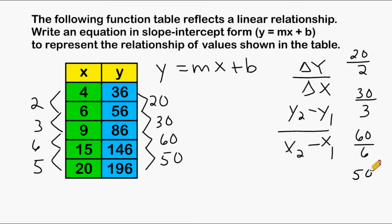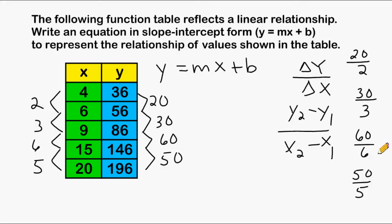If we simplify all of these, we're going to end up with 10. Because 20 divided by 2 is 10, as is 30 divided by 3, 60 divided by 6, and 50 divided by 5. So the slope of this line is going to be 10.